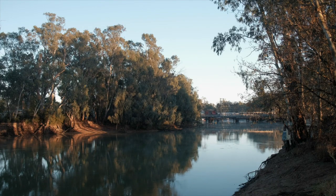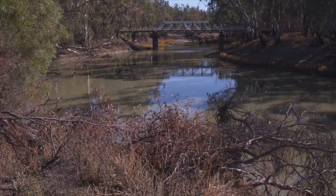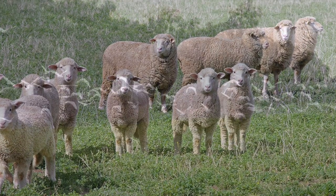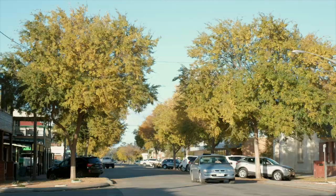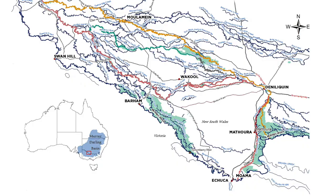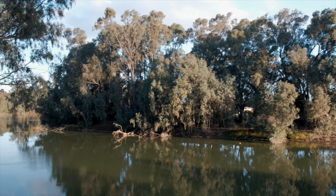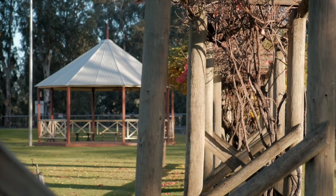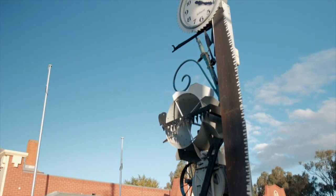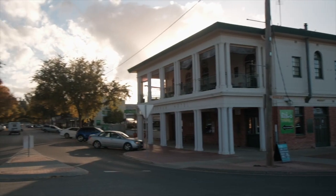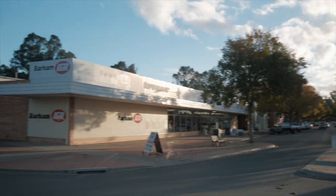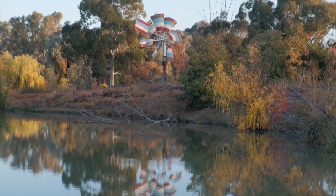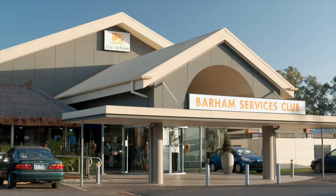The Wakool River system and tributaries provide irrigation and stock and domestic water to around 600 landholders and a number of rural communities. The economies of towns such as Wakool, Daniloquin, Moulamein, Swan Hill and Barham have historically been and still remain connected to the condition of the rivers and forests. As well as the many millions of dollars of agricultural production generated from irrigation in the area, the rivers and forests provide significant economic value through the timber industry, recreational camping, fishing and tourism.